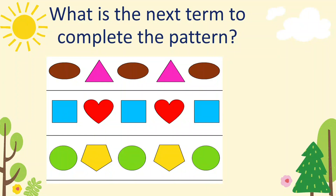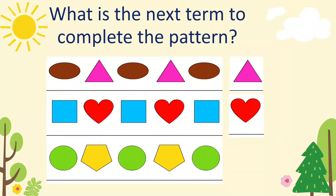Very good! The next term is a pink triangle. Next — correct, it's a red heart. Next — circle, pentagon. A pentagon is a polygon with five sides: circle, pentagon.